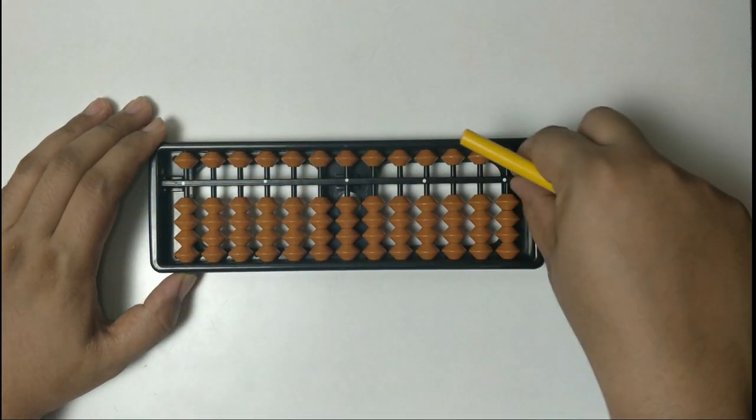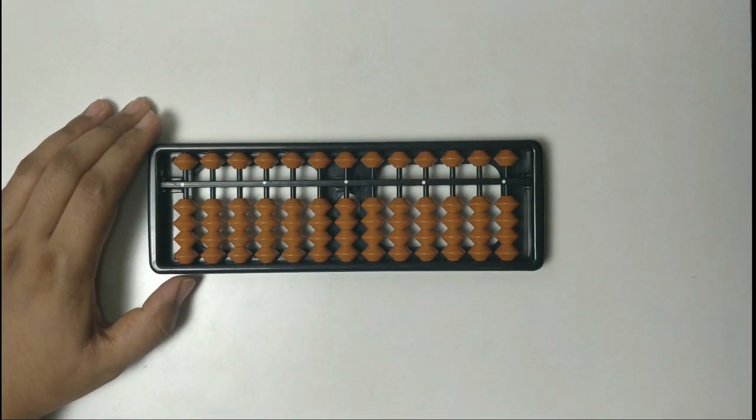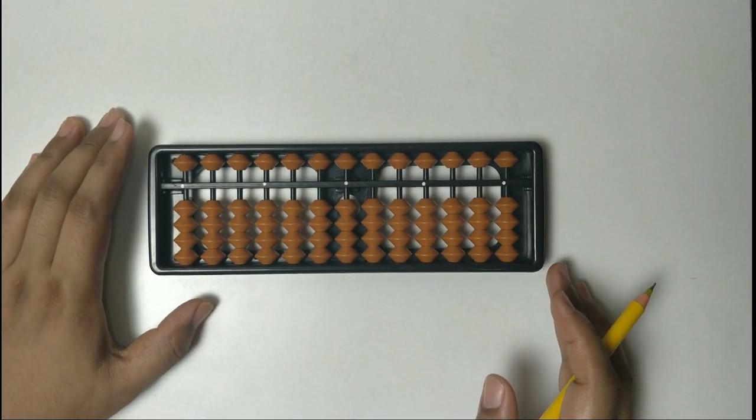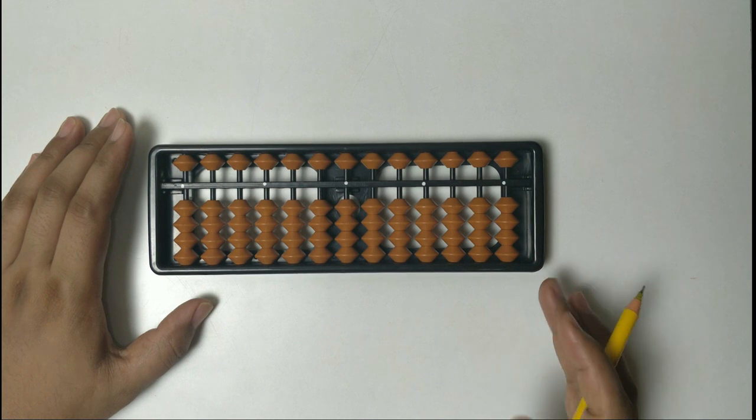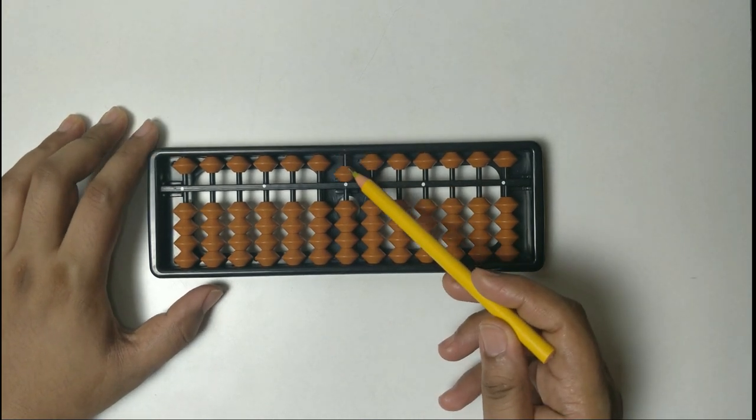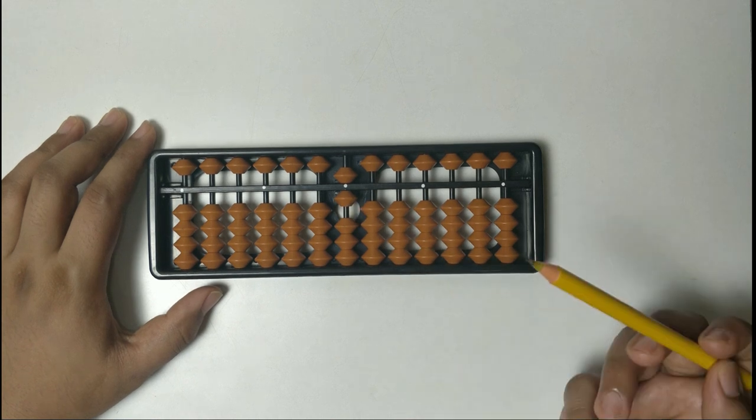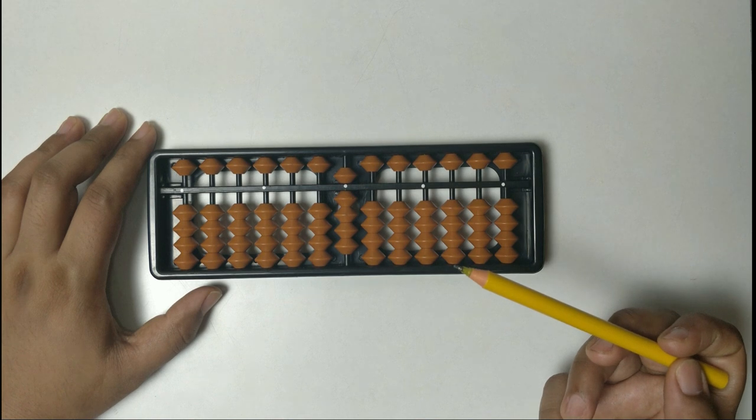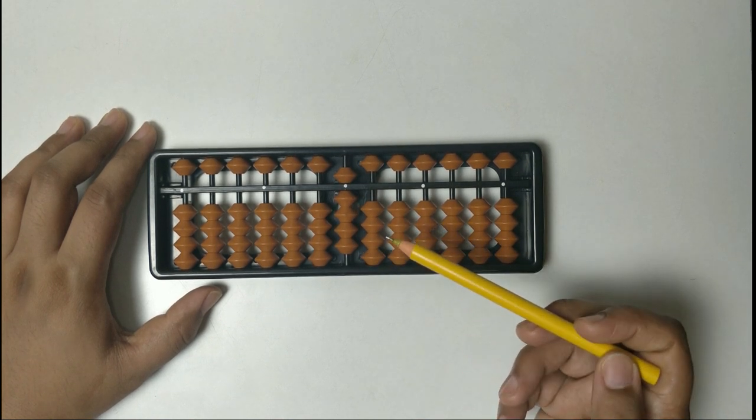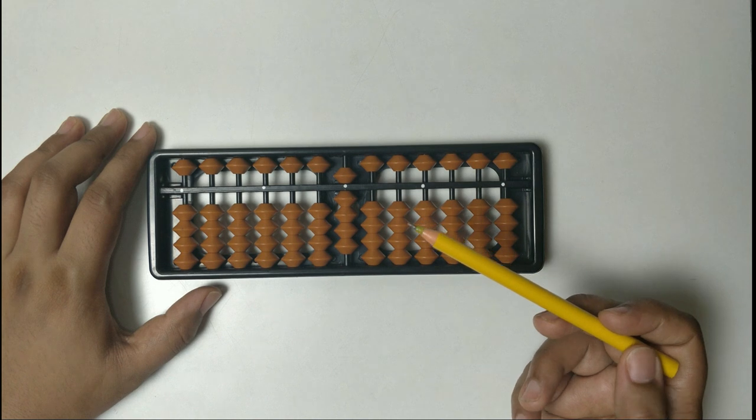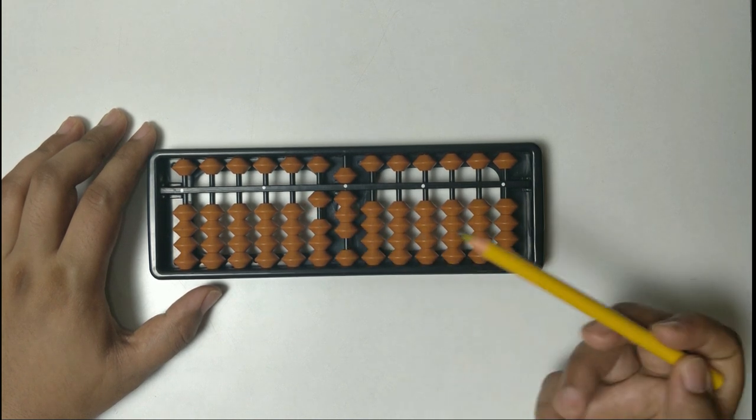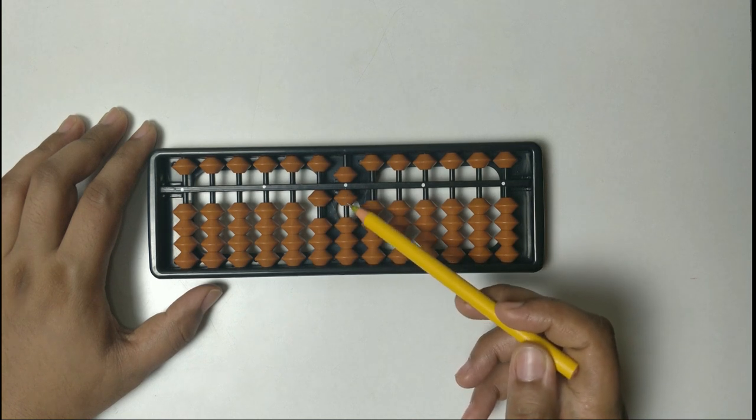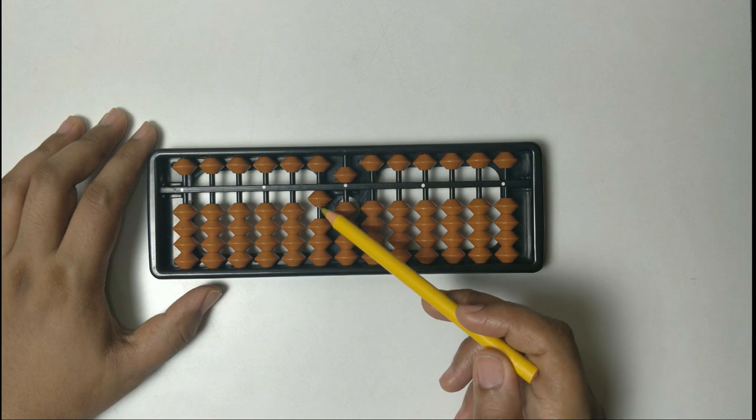We will take one more example then we move to the next formula. For example, we need to solve 6 plus 3 plus 9 minus 3. 5, 6, plus 3: 1, 2, 3. Plus 9, can we add 9 on this row? No. So what we do for 9? Plus 10 minus 1. Then minus 3. So what is the answer? 10, 5, 15.